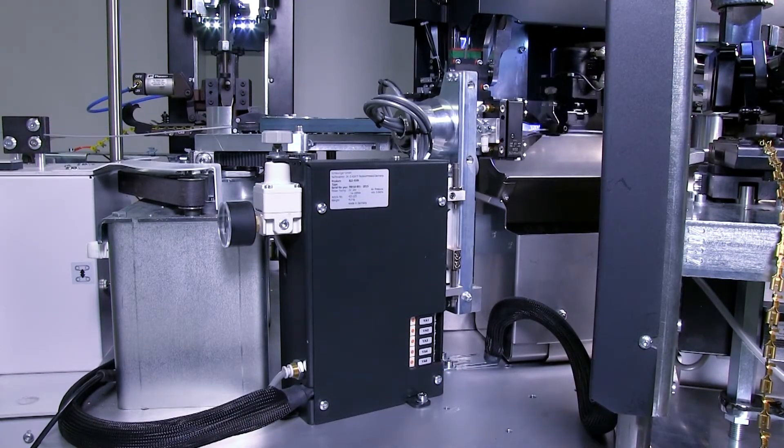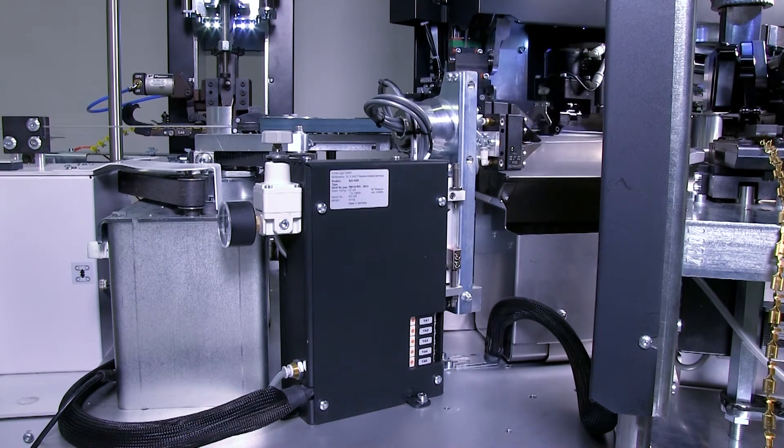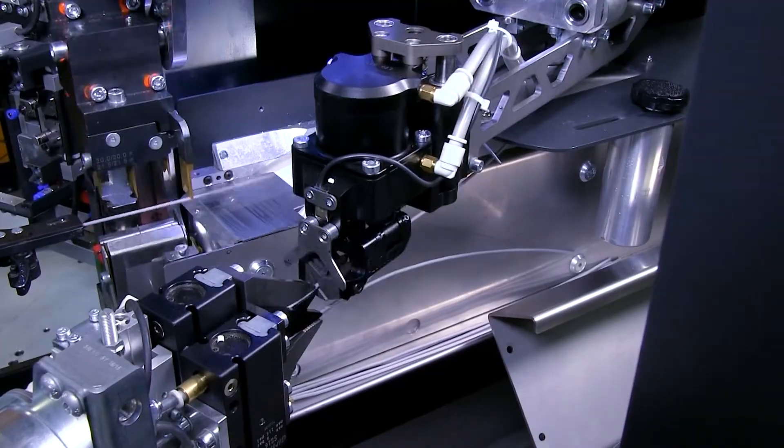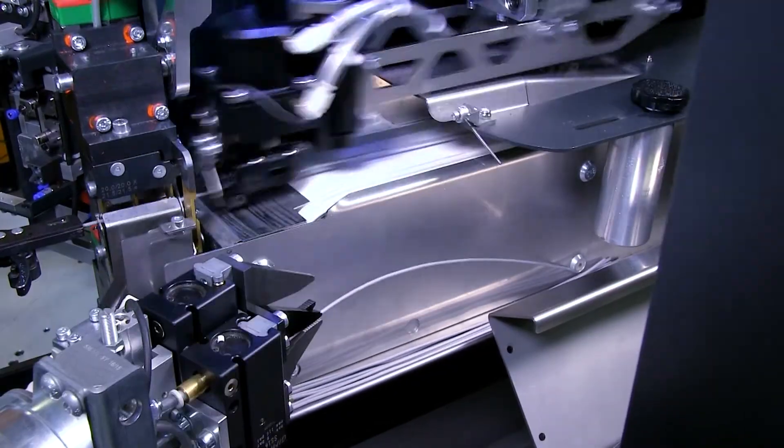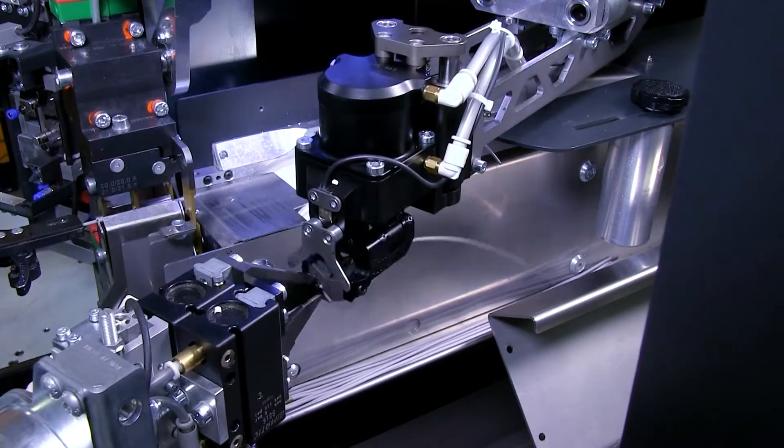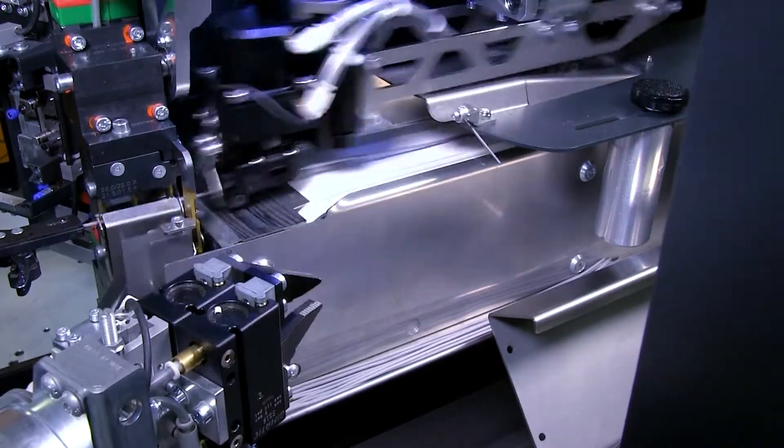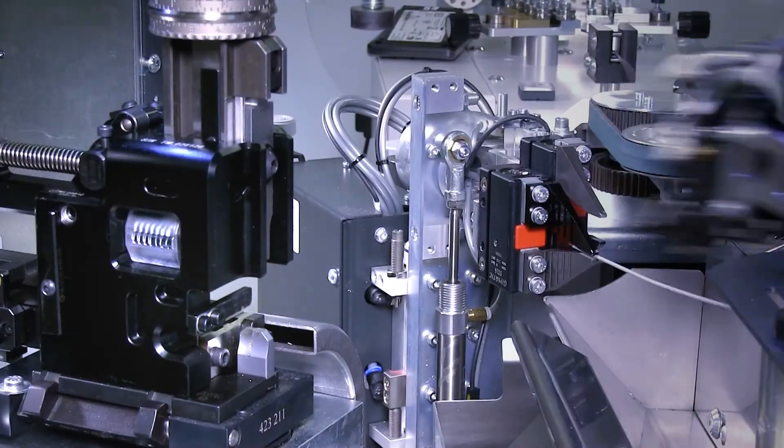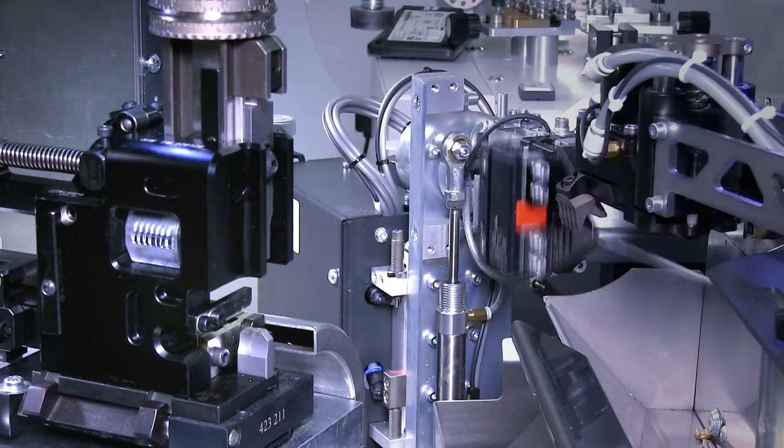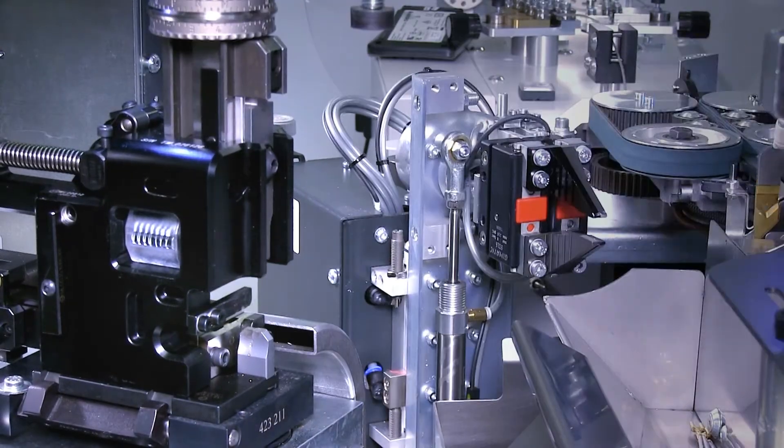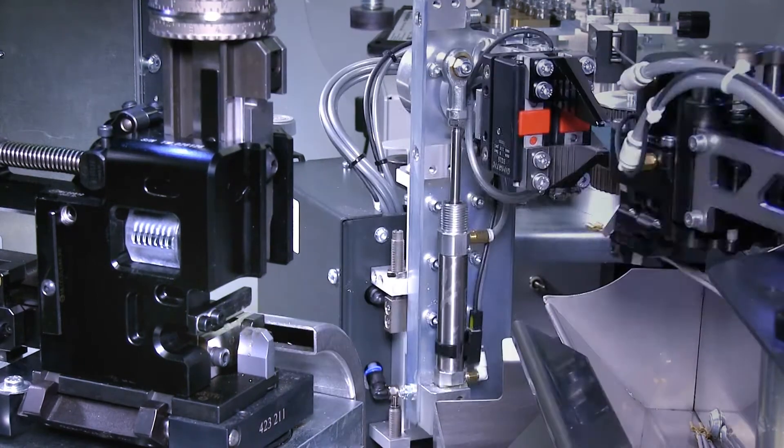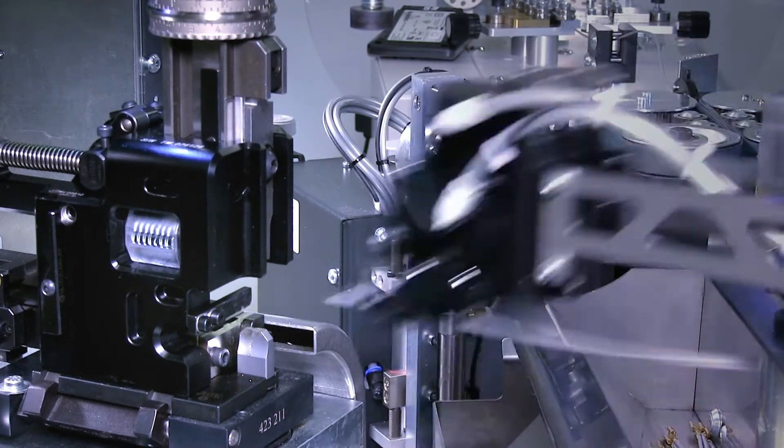The wires are then moved to a separate station for termination into a double crimp. Each wire can have a different length and depending on the terminal design, wire orientation can be either vertical or horizontal. The wire orientation is fully programmable in the crimp center easy operating software and no tools are needed for changes.